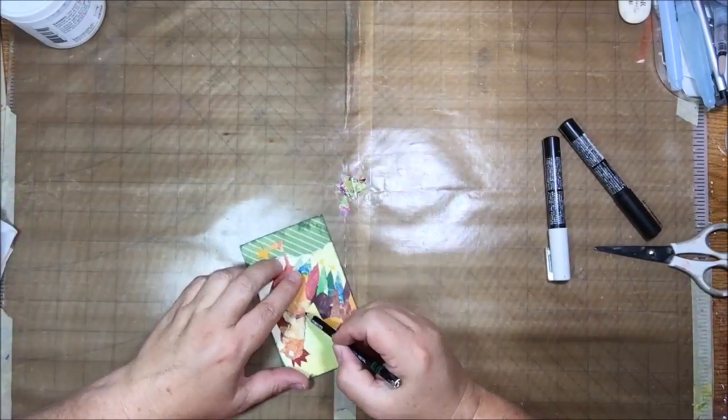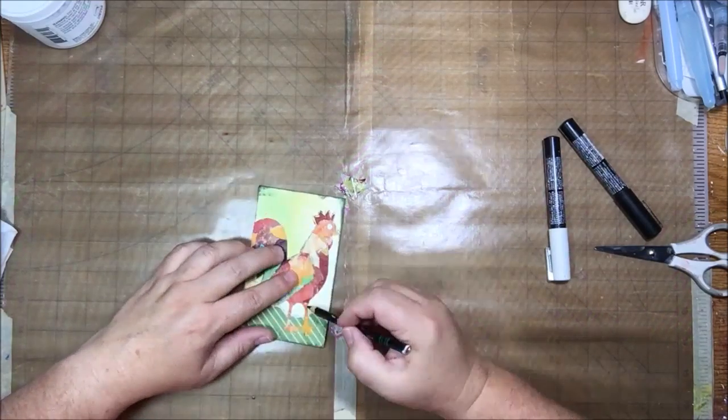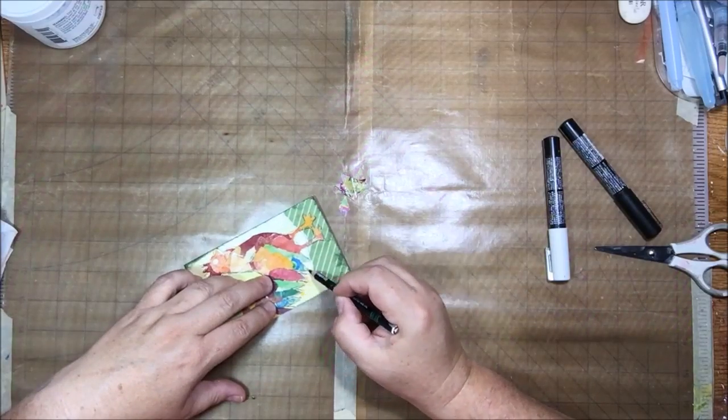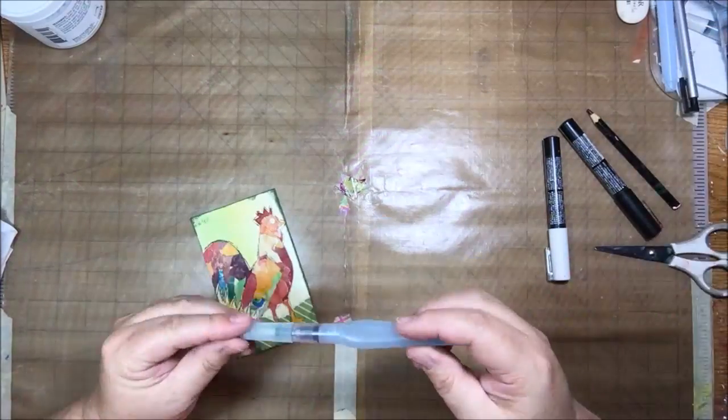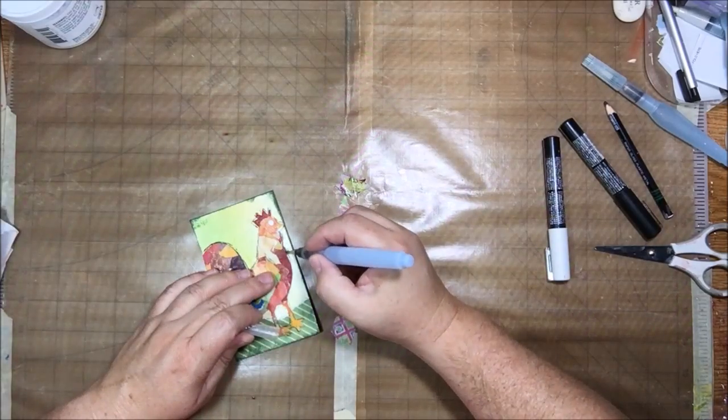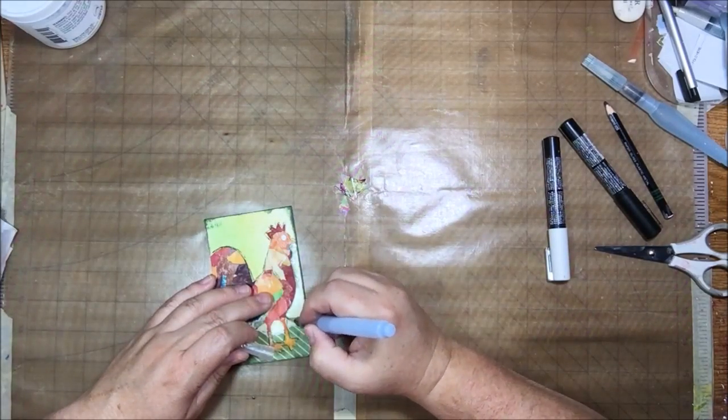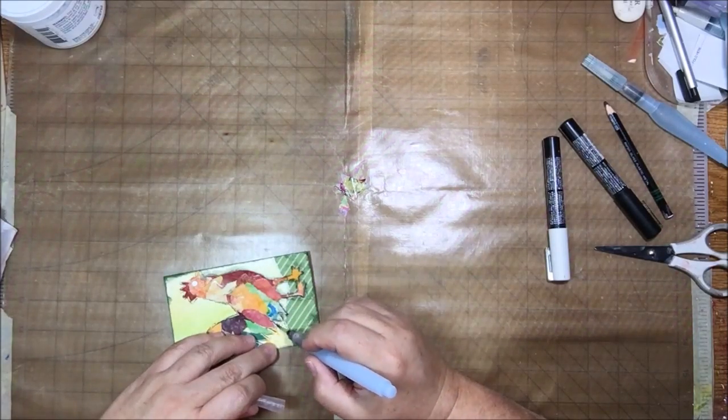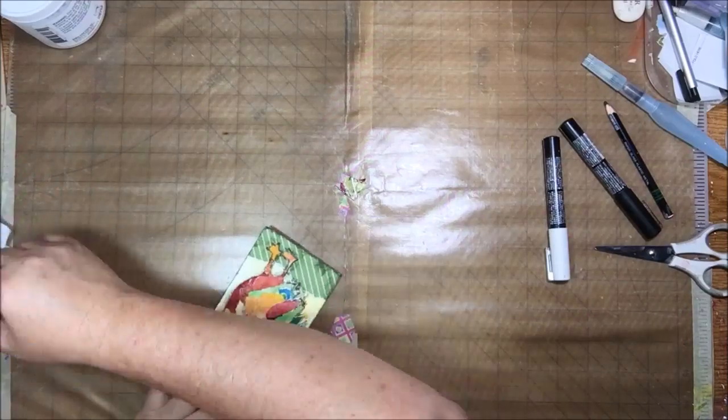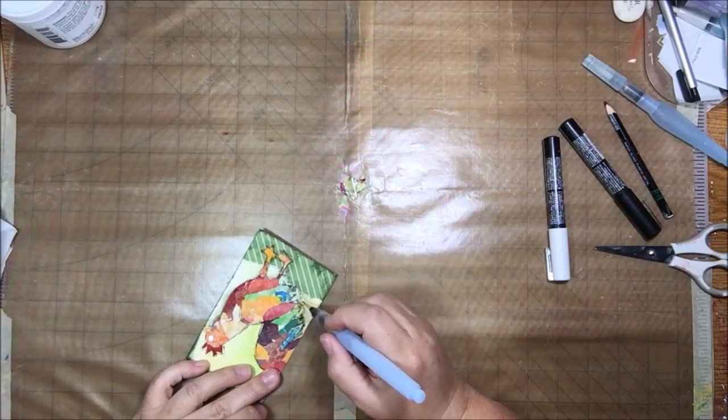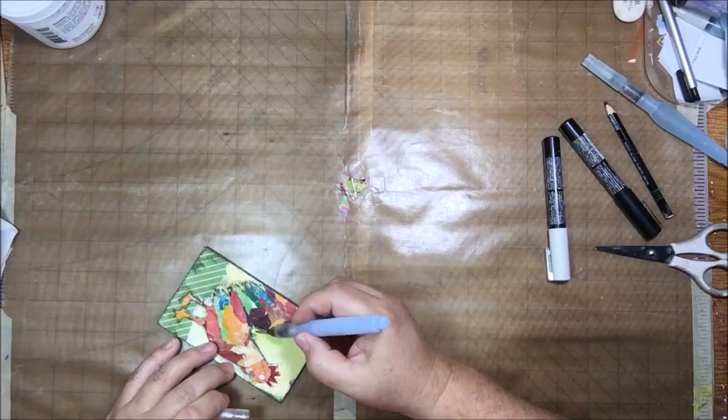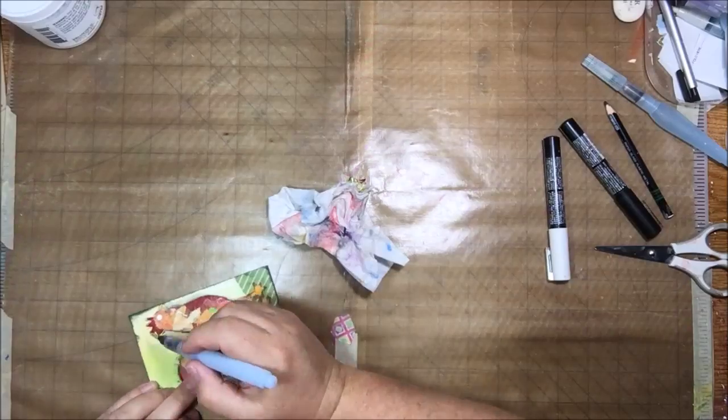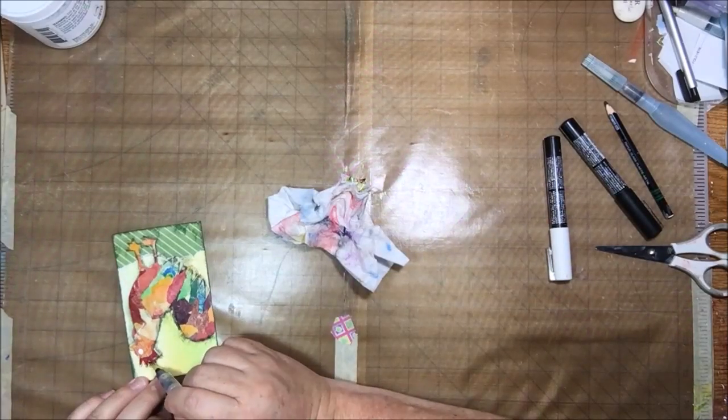Then giving it a dry and then out come the Posca pens. That's my white fine tip Posca, not the extra fine but the regular fine. And then that's my black Stabillo All pencil. That's a very highly water reactive pencil that writes on anything. That's why it's called Stabillo All. I go around the edges of the cut out paper piece and then blend that out with water.